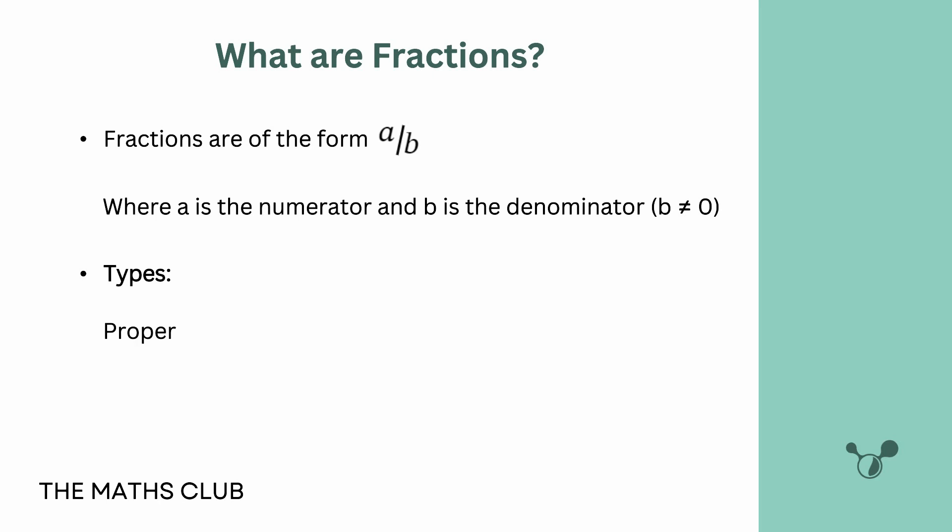Under fractions there are different types. The first type of fraction we know of is the proper fraction. What do we mean by proper? An example is like three over four, where the numerator is less than the denominator.